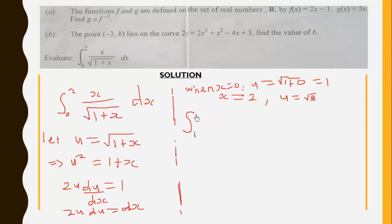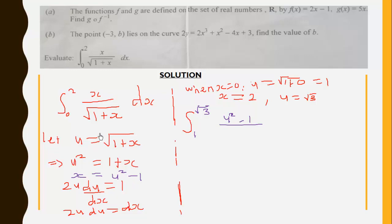Now we substitute everything into the integral. The limits change from 1 to √3. From u² = 1 + x, we get x = u² - 1. So wherever we see x we put u² - 1, wherever we see √(1 + x) we put u, and wherever we see dx we put 2u du. The integral becomes ∫₁^√3 (u² - 1)/u × 2u du.